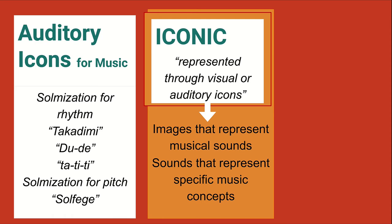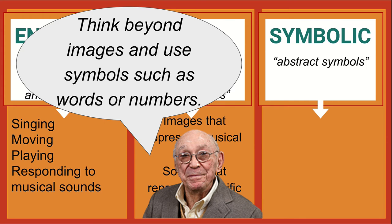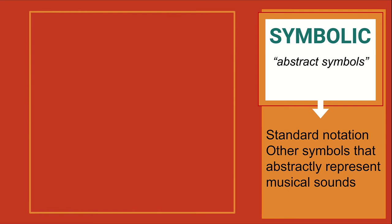The solmization we've used for pitch, such as solfege, is also an auditory icon for music. Let's move to the next mode of understanding: symbolic. The symbolic mode of understanding involves abstract symbols — we think beyond images and use symbols such as words or numbers. In music, we will consider standard notation and other symbols that abstractly represent musical sounds as the symbolic mode of understanding.